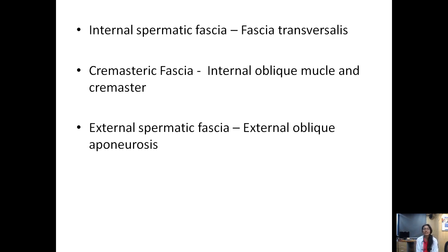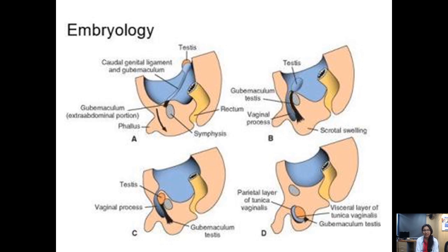The internal spermatic fascia, the innermost layer, is derived from the fascia transversalis. The cremaster fascia is derived from the cremaster muscle or the internal oblique muscle, and the external spermatic fascia is derived from the external oblique aponeurosis. The testis is developing in the posterior abdominal wall with the caudal genital ligament and gubernaculum descending into the labioscrotal swelling. Anterior to it we see the processus vaginalis, developed as an invagination of the peritoneum. There is a narrowing of this processus vaginalis, which obliterates around 36 to 40 weeks of life; the remnant becomes the tunica vaginalis of the testis. If this does not happen, that is how we get an indirect inguinal hernia.